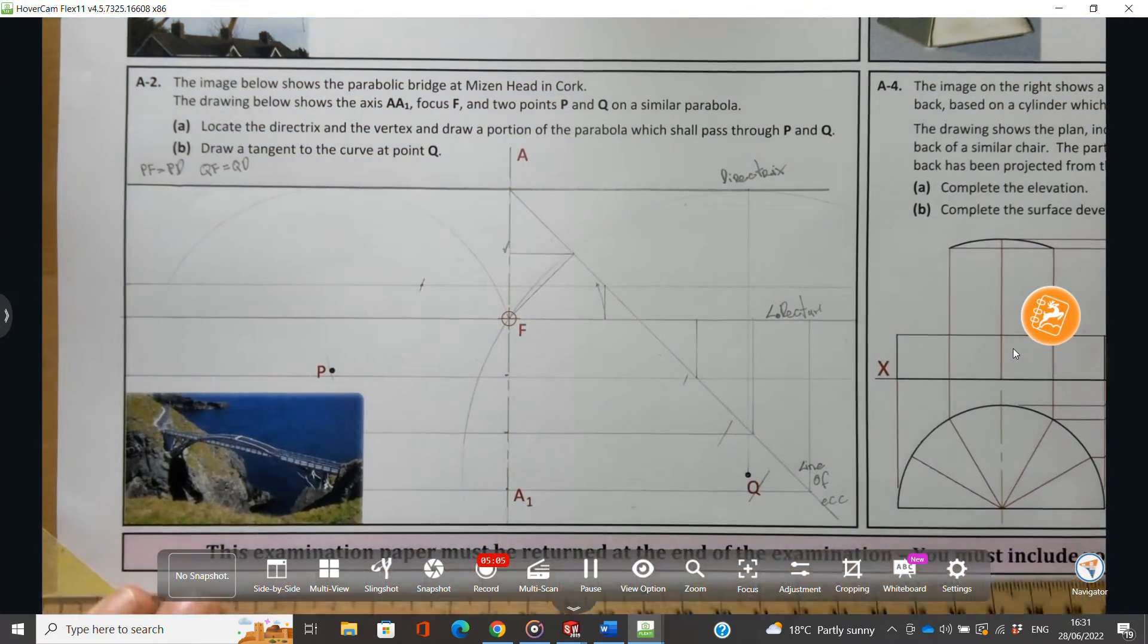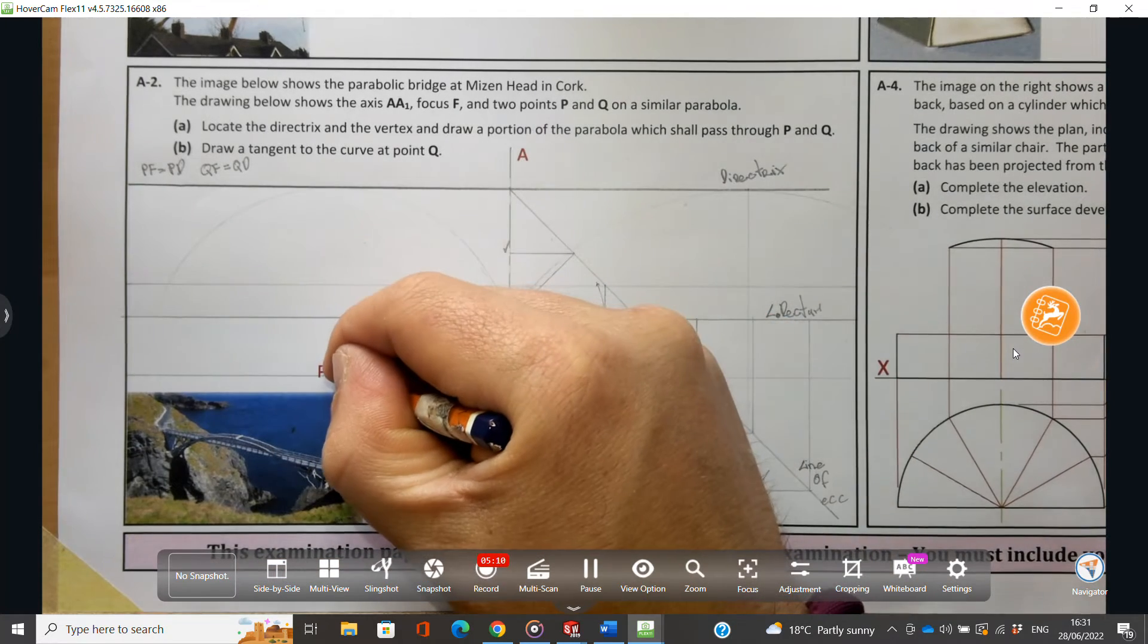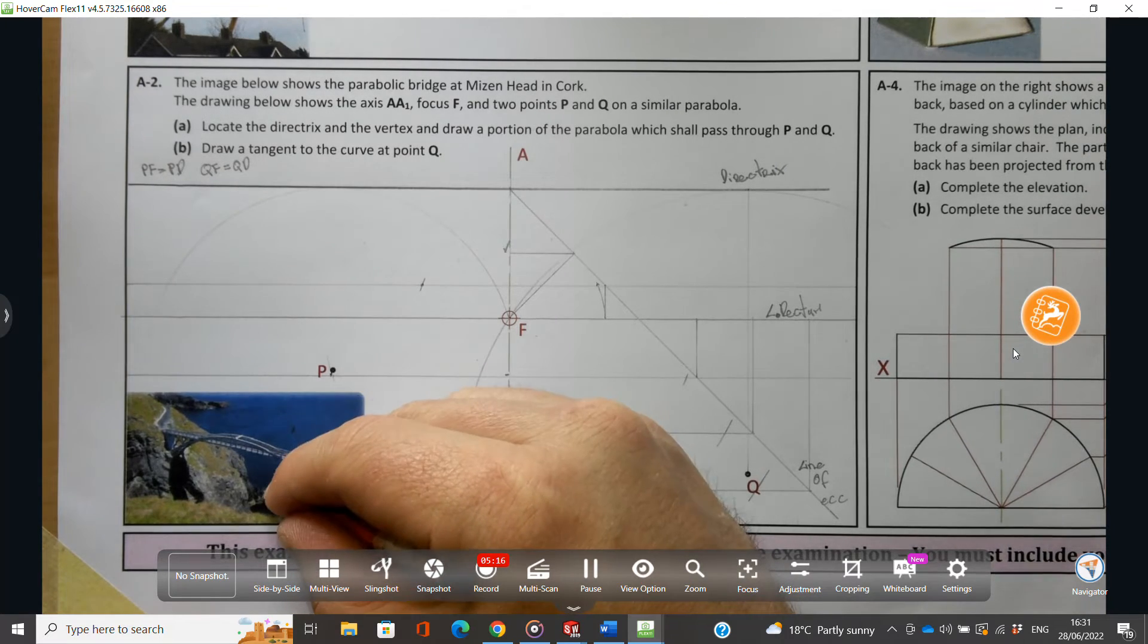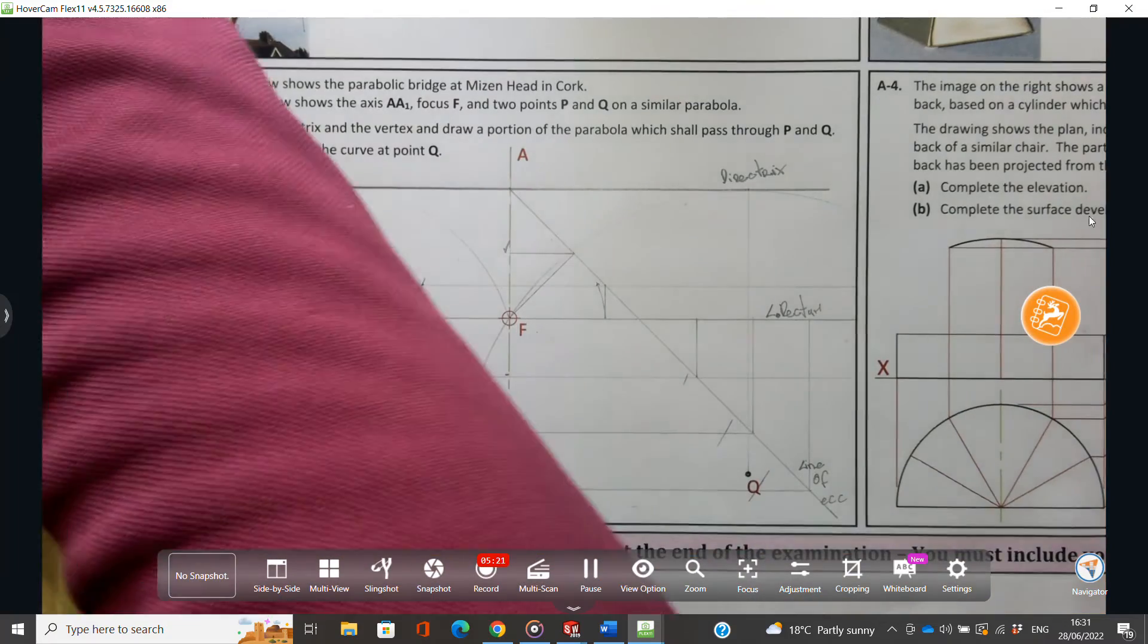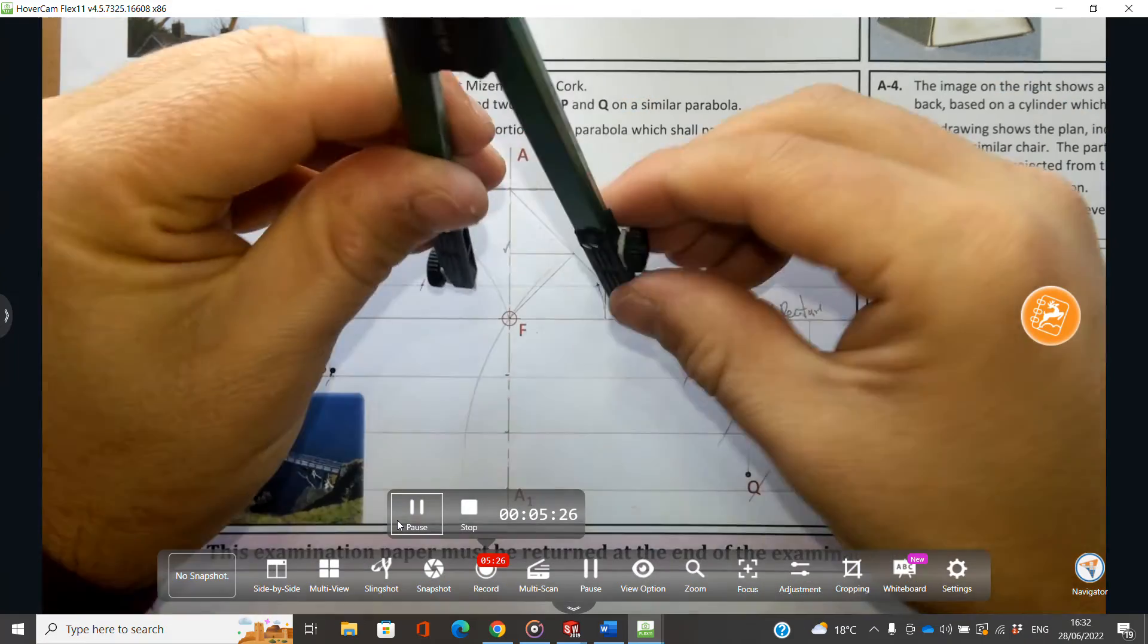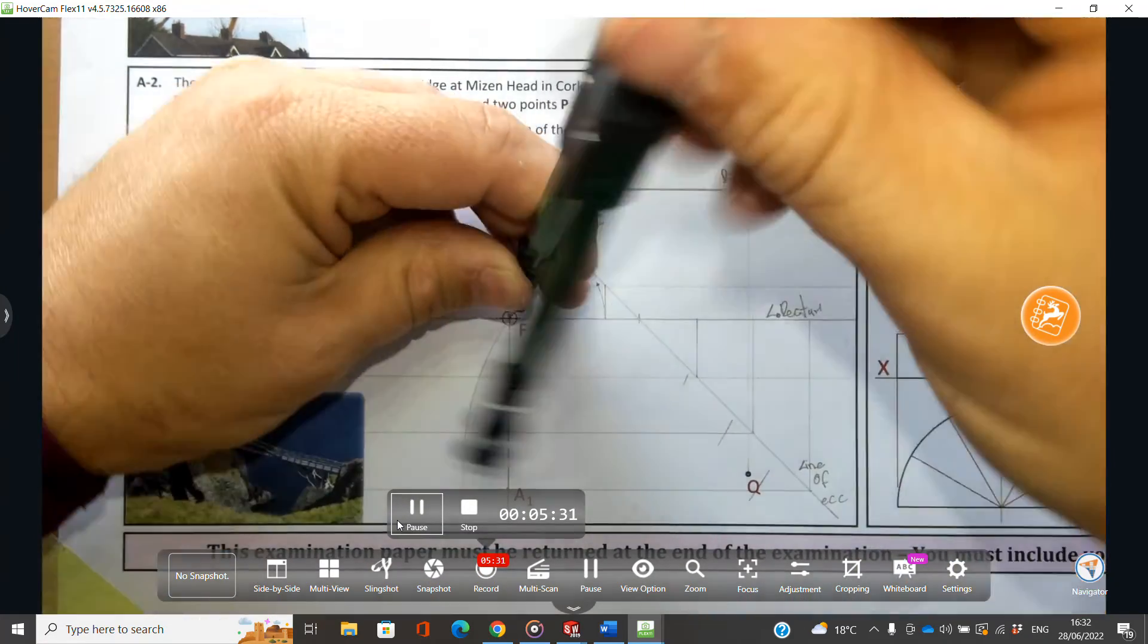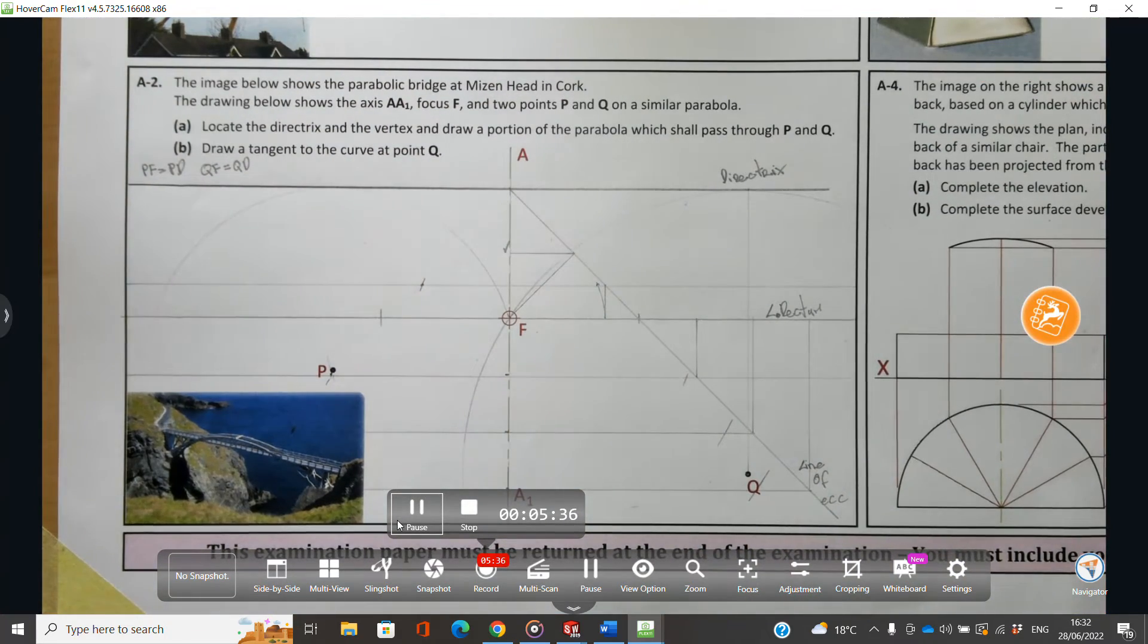Right, and I'm going to freehand sketch these in. I just want to point out that where the latus rectum touches the line of eccentricity is a point on the parabola, and also all conic sections. Next part: draw a tangent to the parabola or tangent curve at point Q.